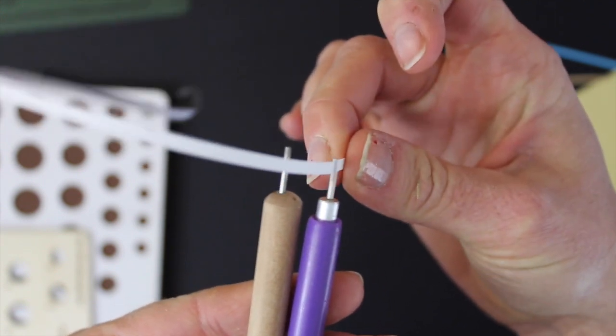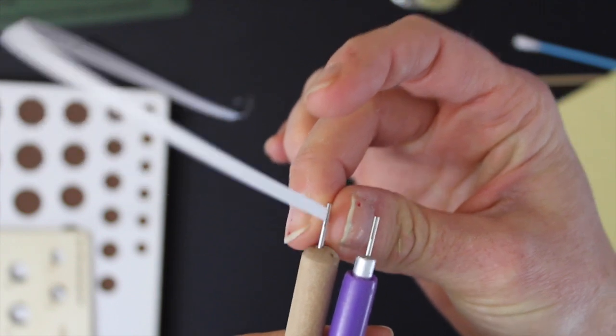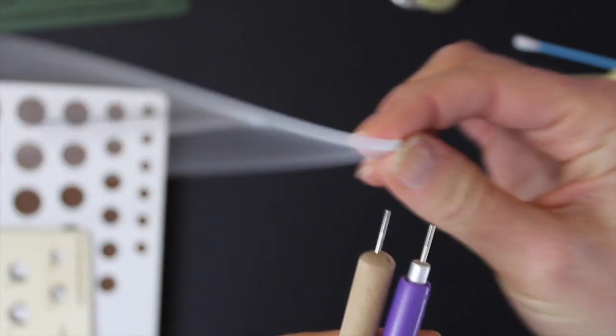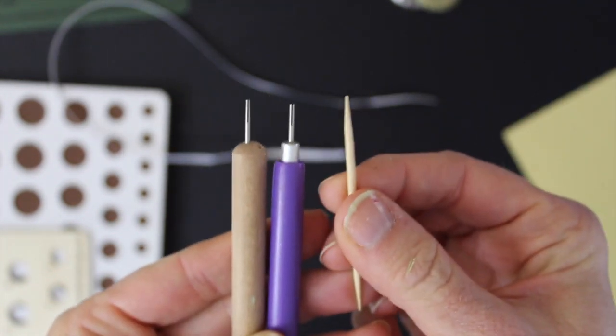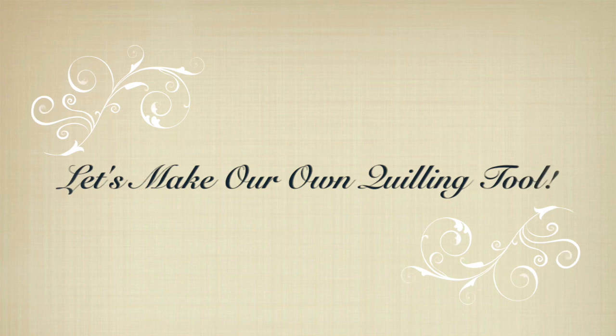The little metal nib has a slit kind of like an eye of a needle that's open on top so you can slide the paper in and twirl it around. You can also do this with an awl or toothpick, but I have a harder time with those, so I like to use a quilling tool. But what do you do if you don't have one?